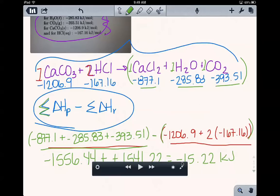And the reason that the unit on this is kilojoules as opposed to kilojoules per mole is because I multiplied every single enthalpy by the number of moles. And so if I was to set this up, it would be 2 moles times negative 167.16 kilojoules per mole. So the moles are going to cancel out, and that's why the final units are kilojoules and not kilojoules per mole.